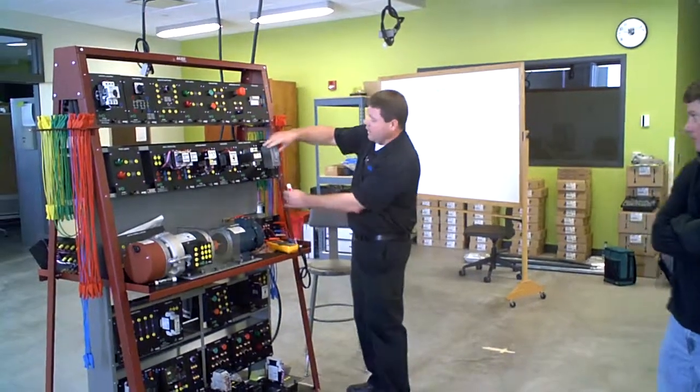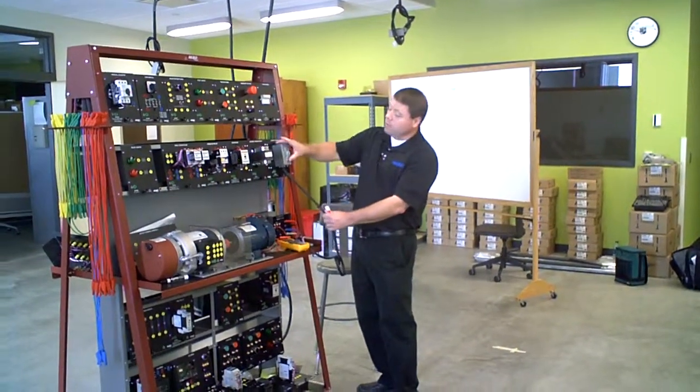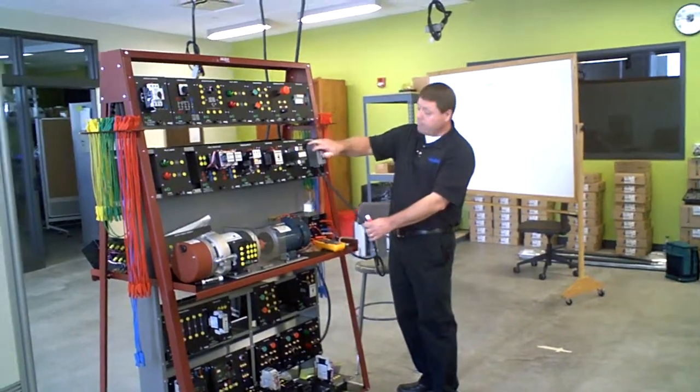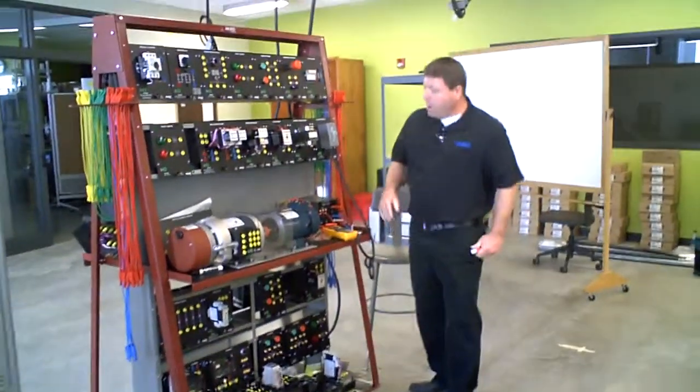So the disconnect is connected here. You can take this and put this up there too. This is a three-pole disconnect. It's manual.